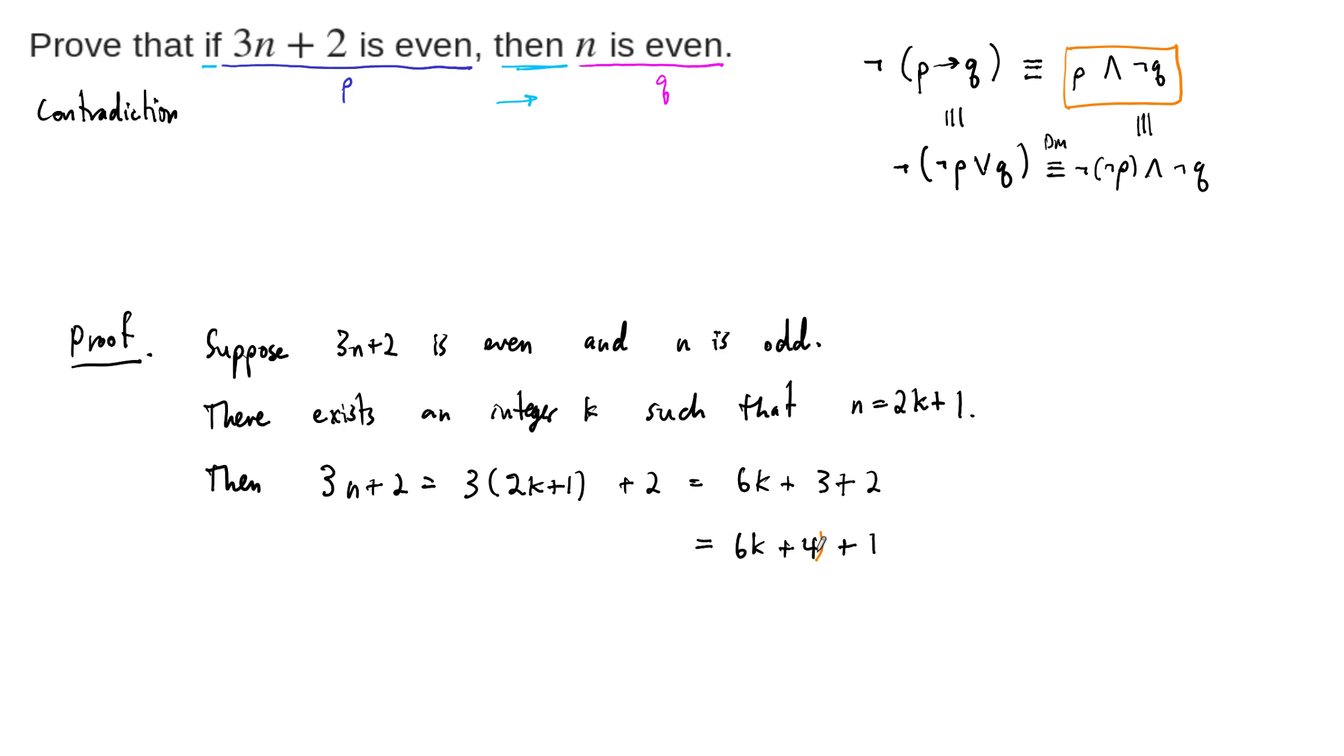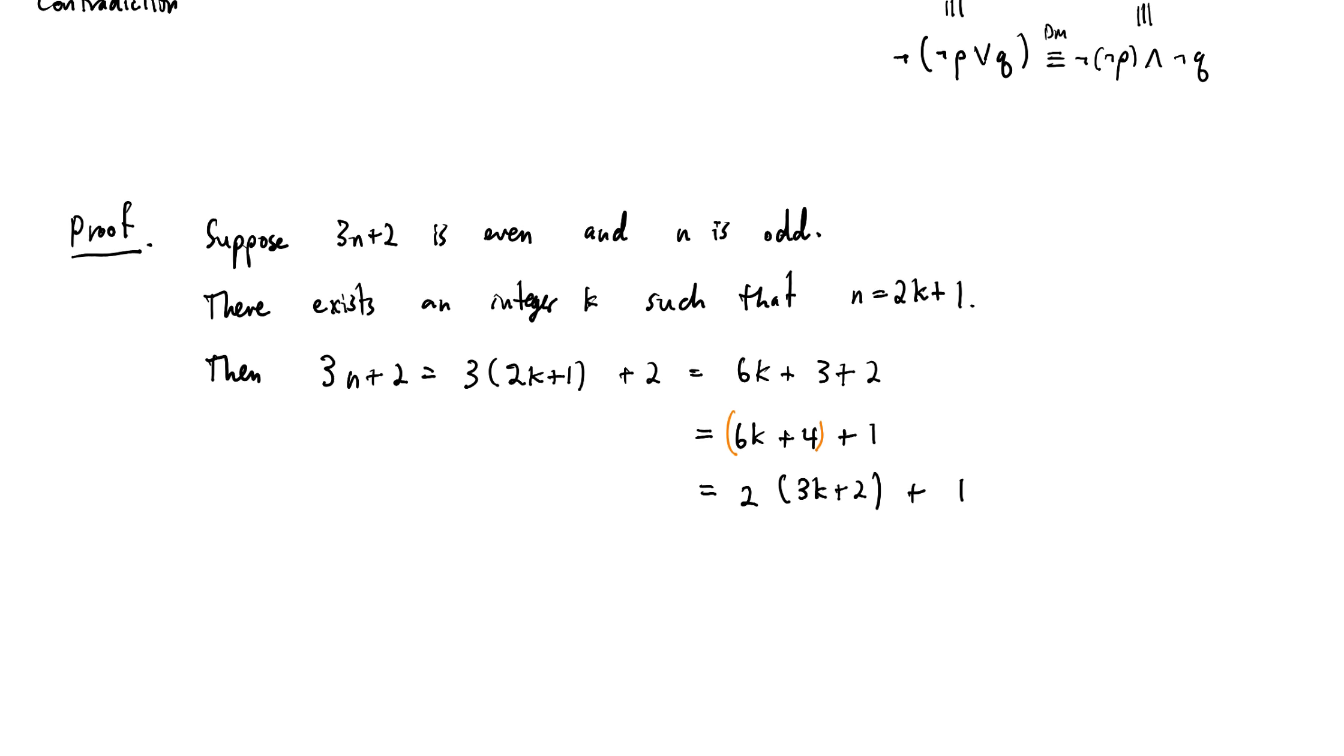But the reason I'm writing it this way is because now we can factor out a 2 from here and we can see our contradiction staring at us. So this becomes 2 times 3k plus 2 plus 1. And as we've seen with some previous proofs, we need to just state, it's obvious because the integers are closed under multiplication and addition, so this is an integer. So then we write where m equals 3k plus 2 is an integer.